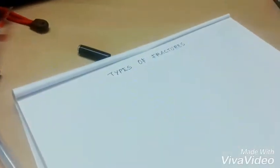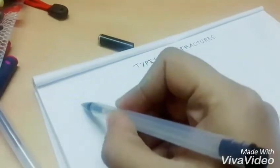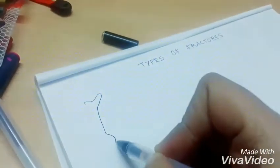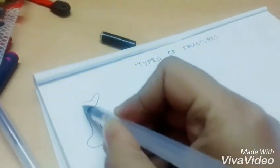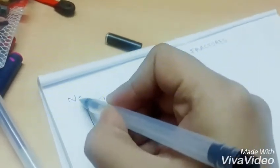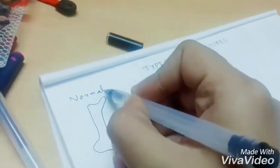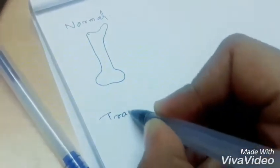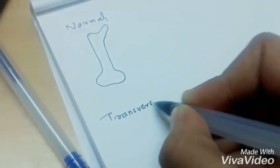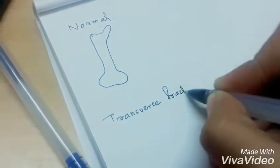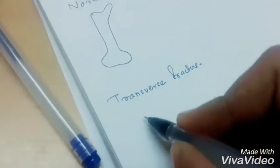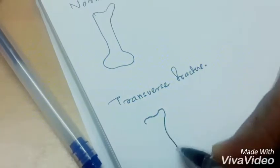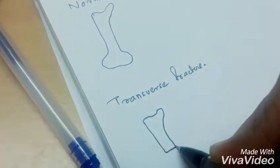Hi friends, today we're going to discuss types of fractures. Consider this as a normal bone. First one is transverse fracture. Here the fractured line will be perpendicular to the long axis of the bone.